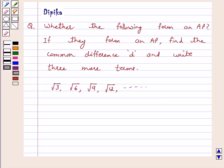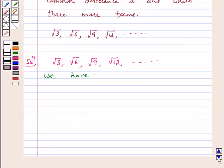Let's start the solution. Solution. Our given list of numbers is root 3, root 6, root 9, root 12 and so on. We have A2 minus A1 is equal to root 6 minus root 3.